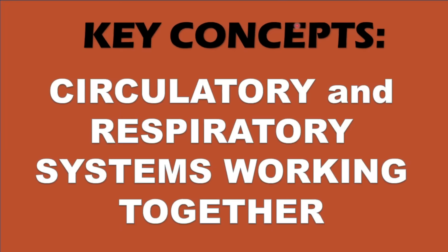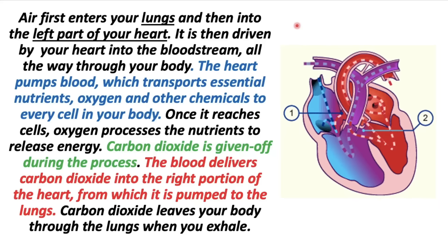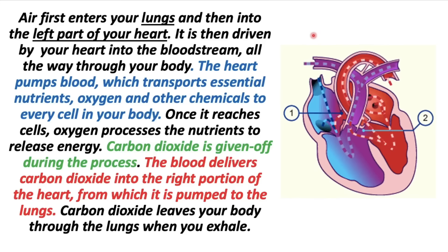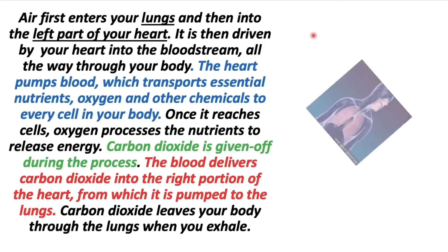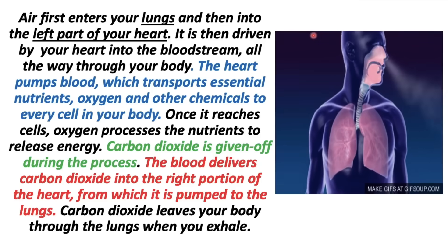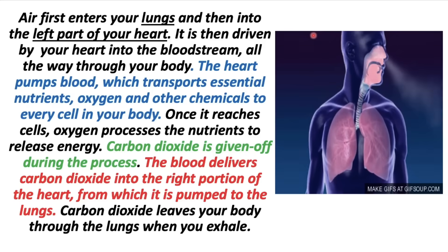Now, let us have the key concepts on how the circulatory and respiratory systems work together. Air first enters your lungs and then into the left part of the heart. It is then driven by your heart into the bloodstream, all the way through your body. The heart pumps blood, which transports essential nutrients, oxygen, and other chemicals to every cell in your body. Once it reaches cells, oxygen processes the nutrients to release energy. Carbon dioxide is given off during the process. The blood delivers carbon dioxide into the right portion of the heart, from which it is pumped to the lungs. Carbon dioxide leaves your body through the lungs when you exhale.